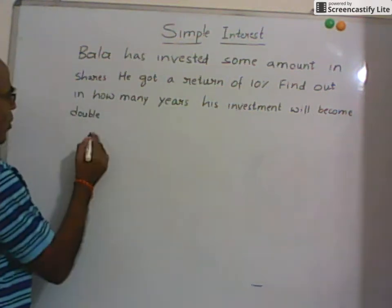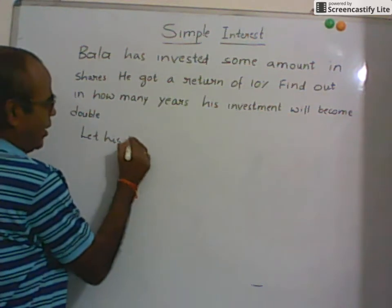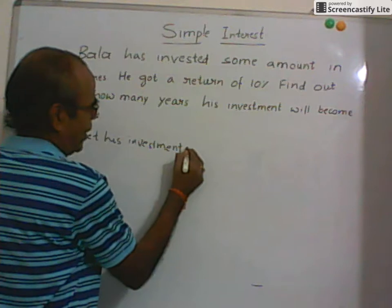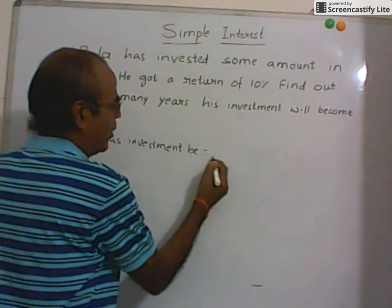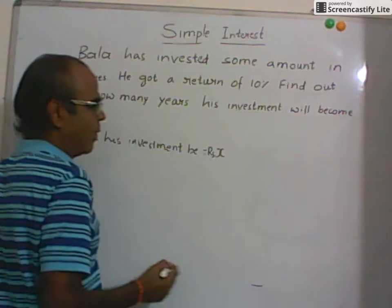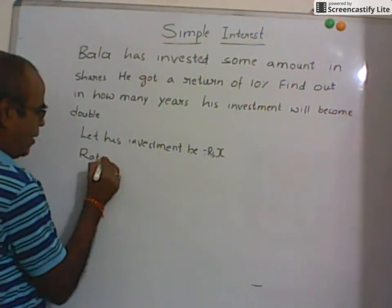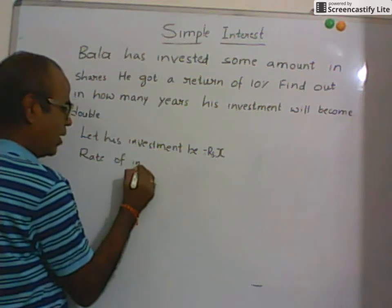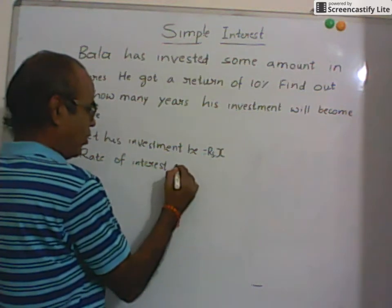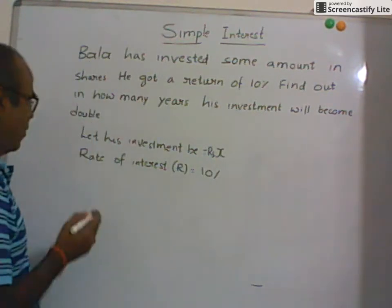So let his investment, that is P, be X rupees. Rate of interest he got per annum, per year, this is r is equal to 10 percent.